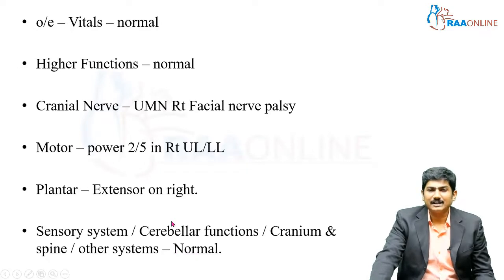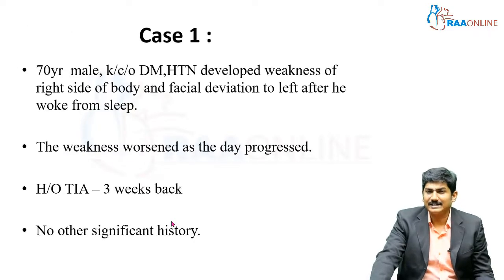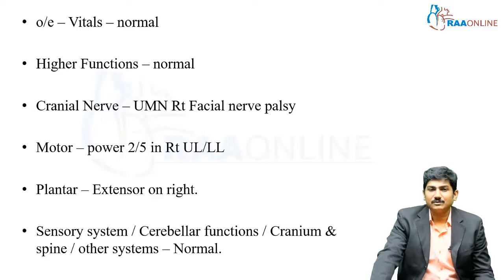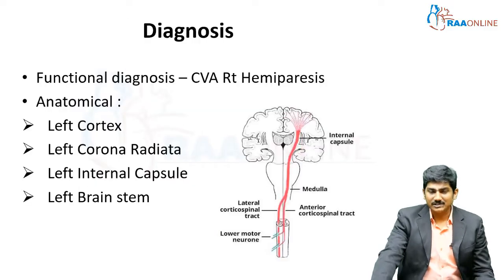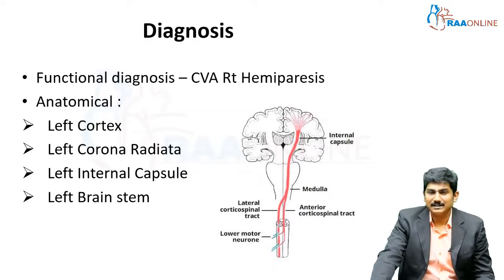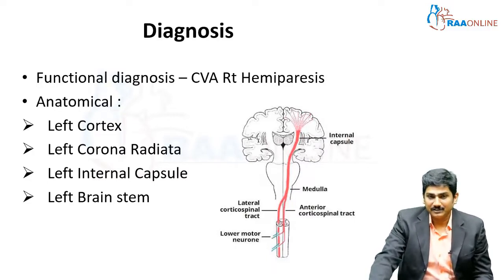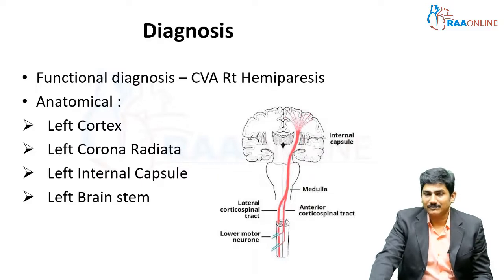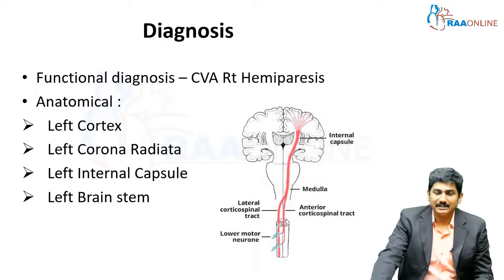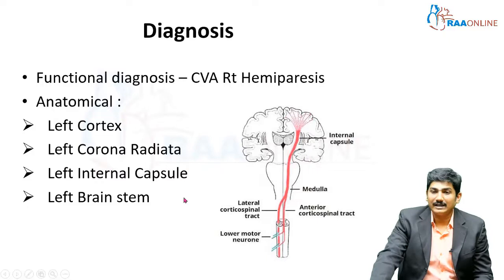So here we have a 70-year-old gentleman who had right-sided weakness. The functional diagnosis is cerebrovascular accident and right hemiparesis. So now we are going to localize anatomically where this stroke comes from — either in the cortex, corona radiata, internal capsule, or the brainstem.